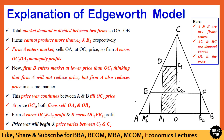The other firm will follow and raise its price slightly above OC2 to earn more profit. Thus a price war will begin between the two firms A and B, and the price will vary between C1 and C2. This is what Edgeworth explained in this model.